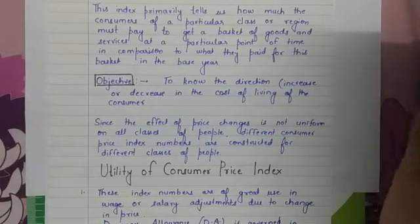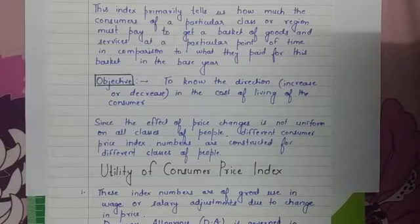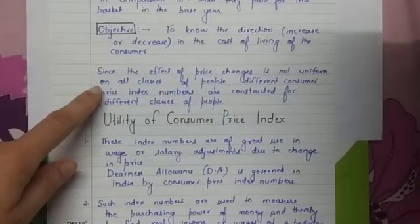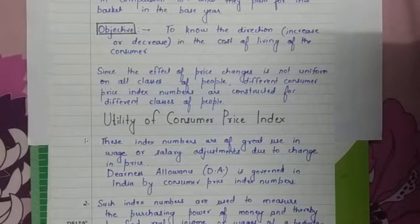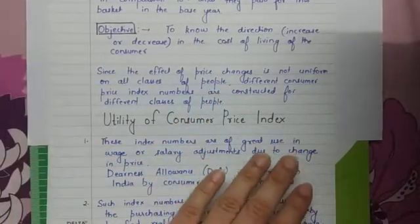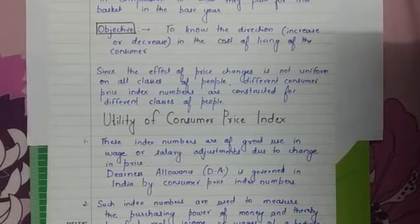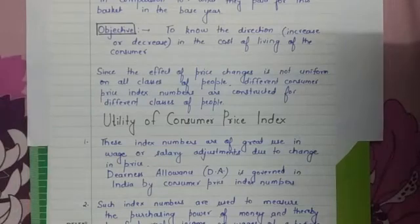The purpose of calculating the CPI is to know the direction — that is, increase or decrease — in the cost of living of the consumer. Since the effect of price changes is not uniform on all classes of people, different consumer price index numbers are considered for different classes. For retailers, consumers, and wholesalers, there may be different CPIs, because the effect of price change is not similar on different groups. Poor people may be affected badly by price increases while rich people may not be affected much.